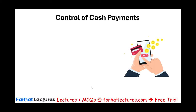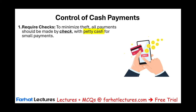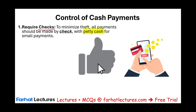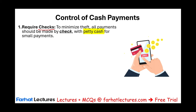Let's start by discussing a golden rule for internal control over cash payments: we always make cash disbursements using checks. When we say checks, it doesn't have to be a physical check — electronic payments serve the same purpose. A check keeps a record of when we made the payment, who made the payment, for what purpose, how much, and so on.